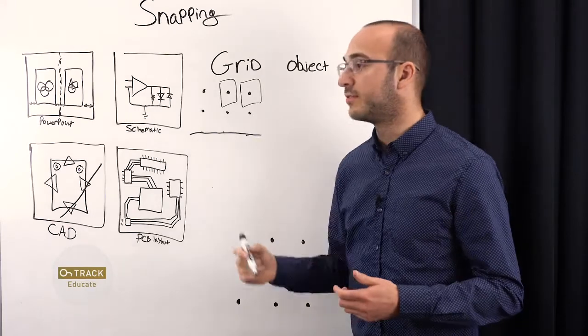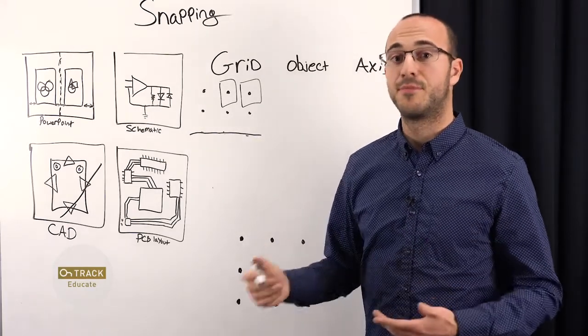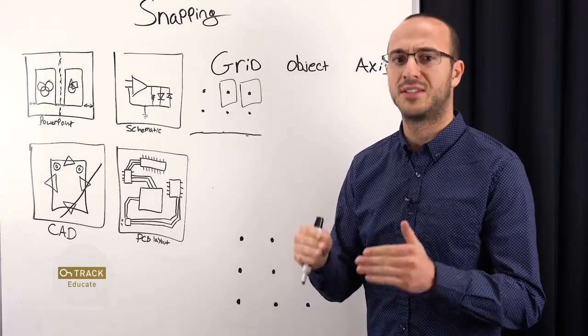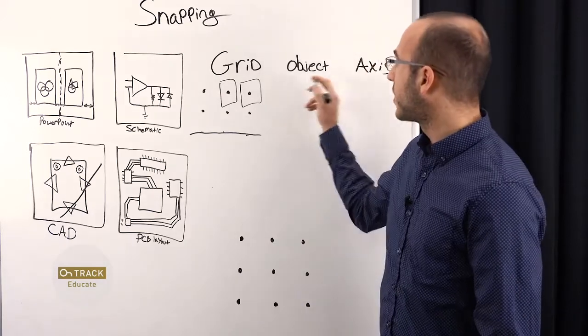But what if you don't have the same type of components, or if you don't all have the same size and pitch? You can use object snapping.